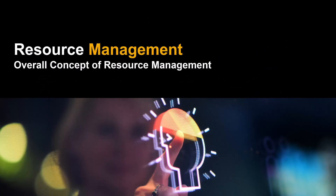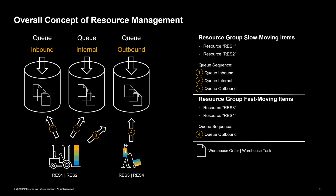After we have captured the definition and the objects of resource management, now we can have a look at the overall concept. Here you can see an example of how you can set up your resource management. We have defined three different queues: queue inbound for the inbound process, queue internal for internal processes such as replenishment activities, and queue outbound for the outbound process. Each of those queues can contain several warehouse orders and warehouse tasks.